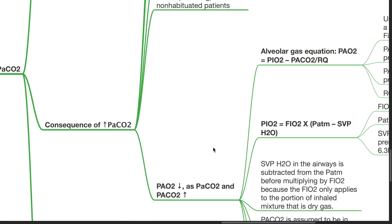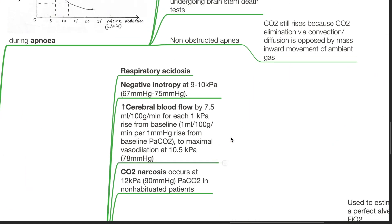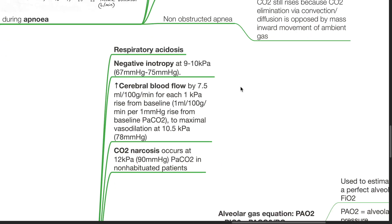The consequences of hypercapnia: increased CO2 in the blood results in respiratory acidosis, and negative inotropy occurs at 67–75 mmHg. There is an increase in cerebral blood flow by 7.5 mL per 100 g per minute for each 1 kPa rise from baseline — or in other words, an increase of 1 mL per 100 g per minute per 1 mmHg rise from baseline PaCO2 — to a maximal vessel dilation at 78 mmHg.